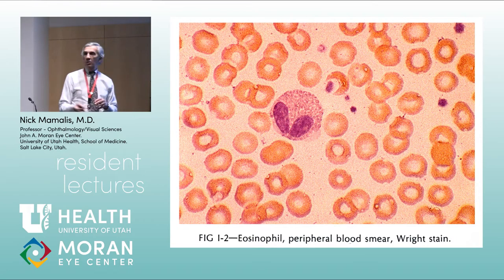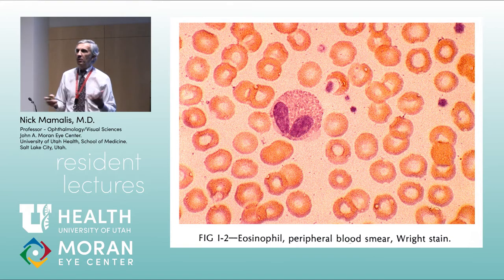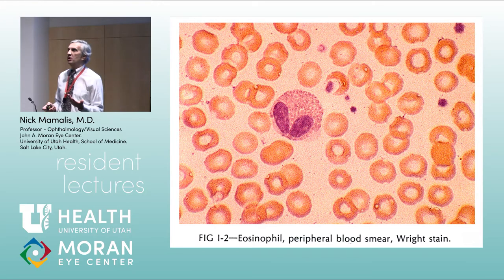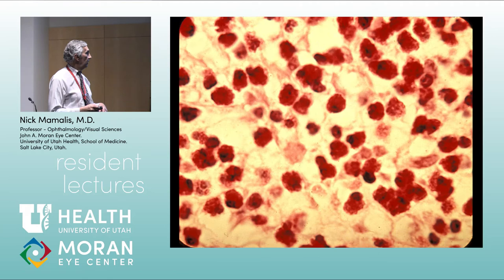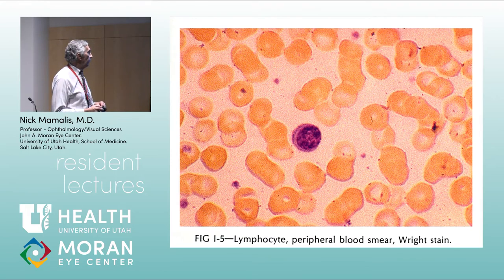Eosinophils also ramp up inflammation and attack parasites. The key thing to remember about eosinophils is they tend to attack parasites — so when you see a whole bunch of eosinophils, you're usually thinking of some kind of parasitic infection. You don't see them much in ophthalmology, but they're a sign of parasitic infection.